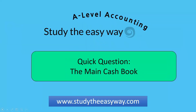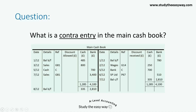Here's a quick question about the main cash book. What is a contra-entry in the main cash book? Here's an example of one.